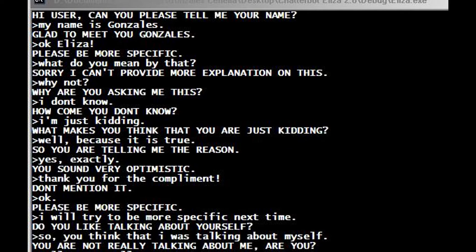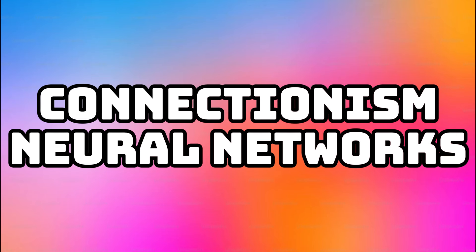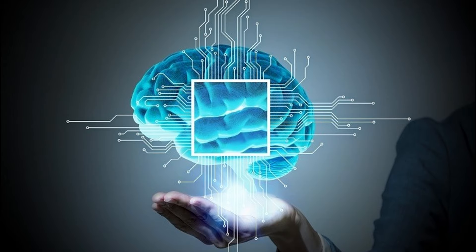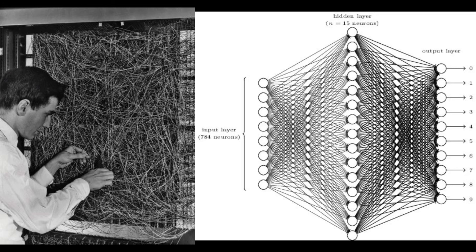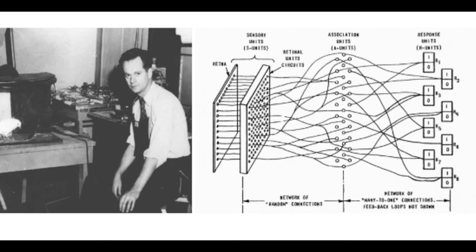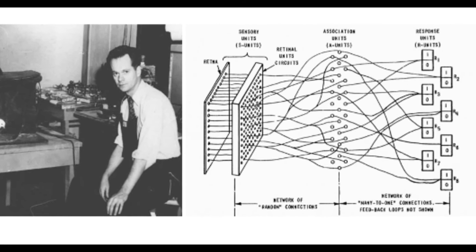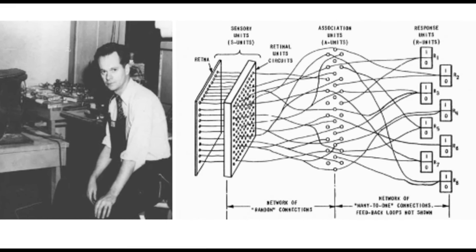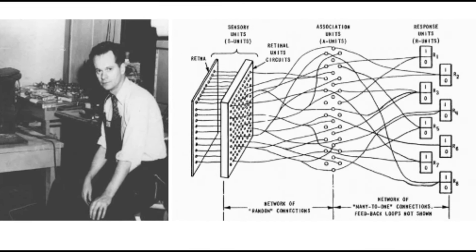The second stage is known as connectionism and neural networks. In the 1980s, connectionism provided an alternative approach inspired by the brain's neural networks. Artificial neural networks, composed of interconnected nodes, learn from data through adjusting connection weights.